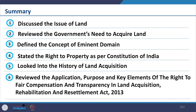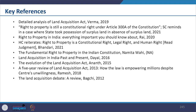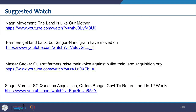In summary, we discussed the issue of land, reviewed the government's need to acquire land, defined the concept of eminent domain, looked into the rights to property as per our constitution, looked into the history of land acquisition, and identified and reviewed key elements of the 2013 Act. The key references and suggested readings are listed. That is all for today. Thank you.